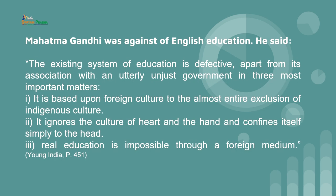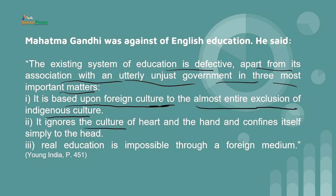Mahatma Gandhi however was against English education and he said that the existing system of education is defective, apart from its association with an utterly unjust government, in three important matters: it is based upon foreign culture to the almost entire exclusion of indigenous culture; it ignores the culture of heart and the hand and confines itself simply to the head; and the real education is impossible through a foreign medium.